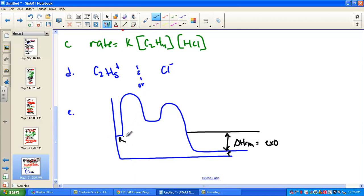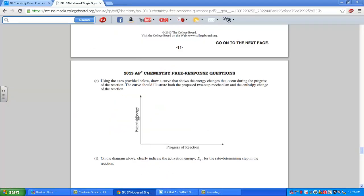So as reactants form products, we had to indeed show the overall energy change for the reaction. Delta H of reaction was exothermic. So we had to be sure that the products were indeed at lower energy. We had to label the activation energy, which is from the reactants.